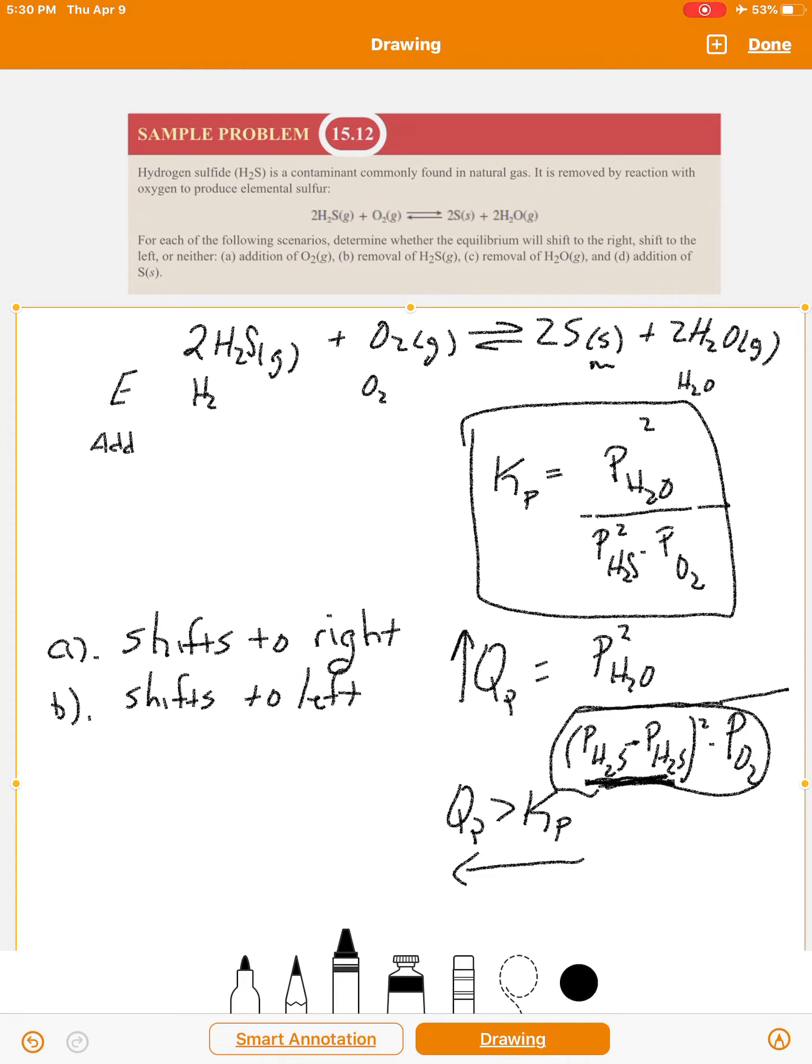That's why it was so essential that we learn that. So that means it shifts to the left. Now when we say shifts to the left, what we mean is if you take some H2S out, the reaction will run in the reverse direction and it will form more H2S and it will also form more O2. Okay, so that's part B. Now let's move on to part C.